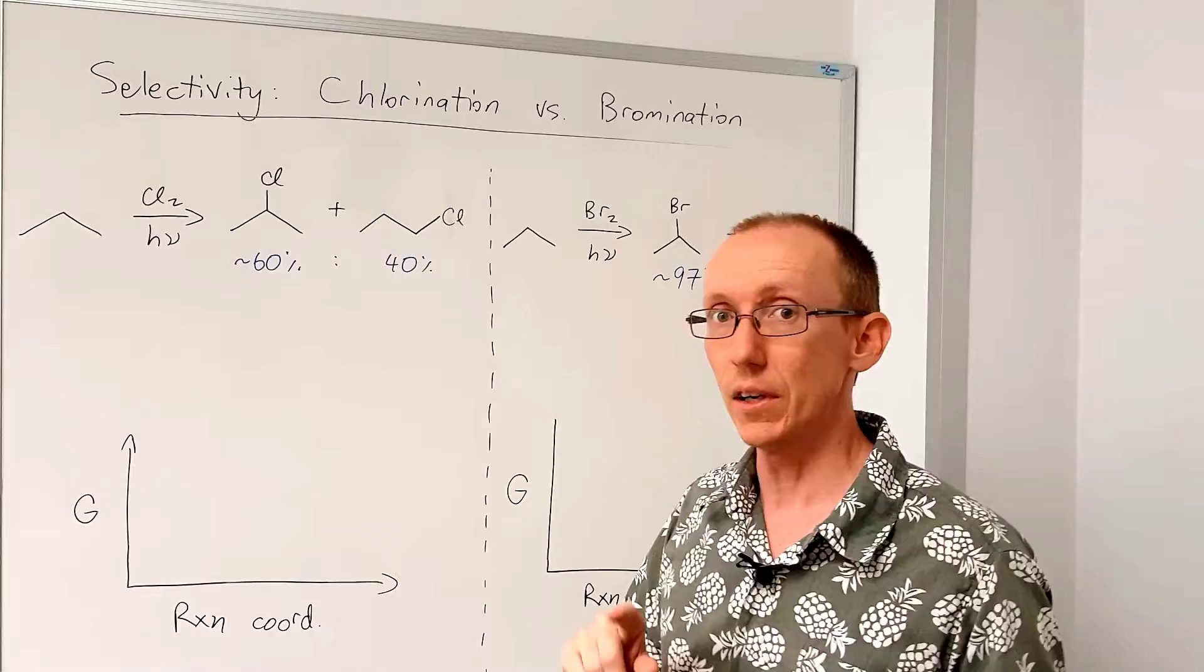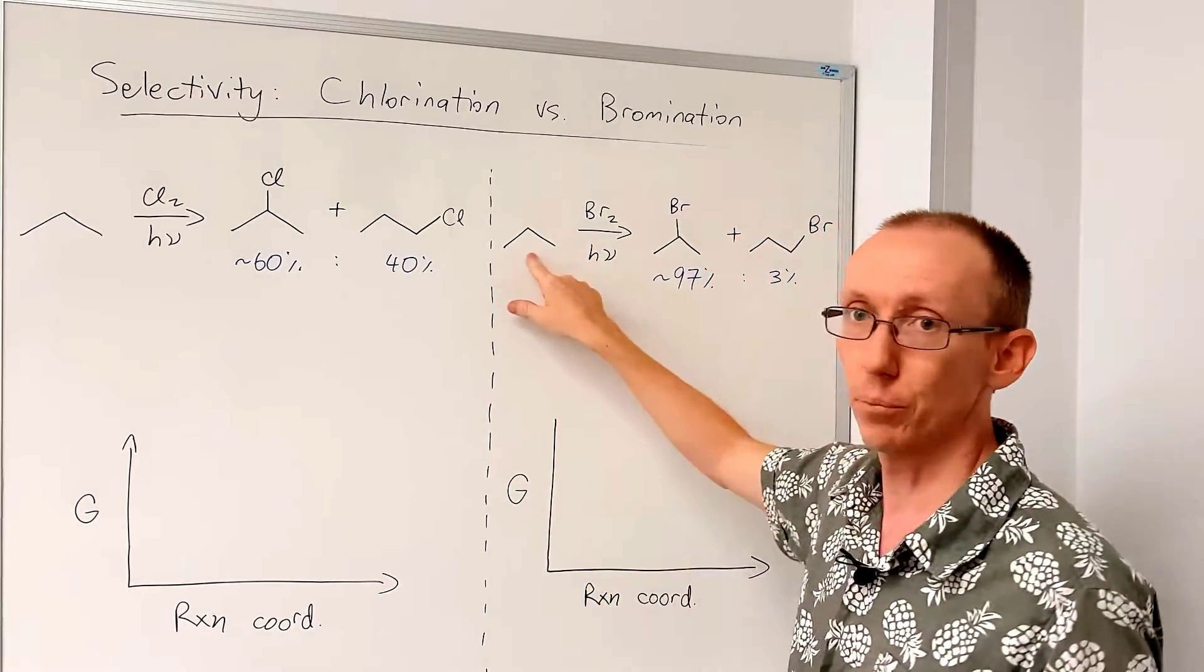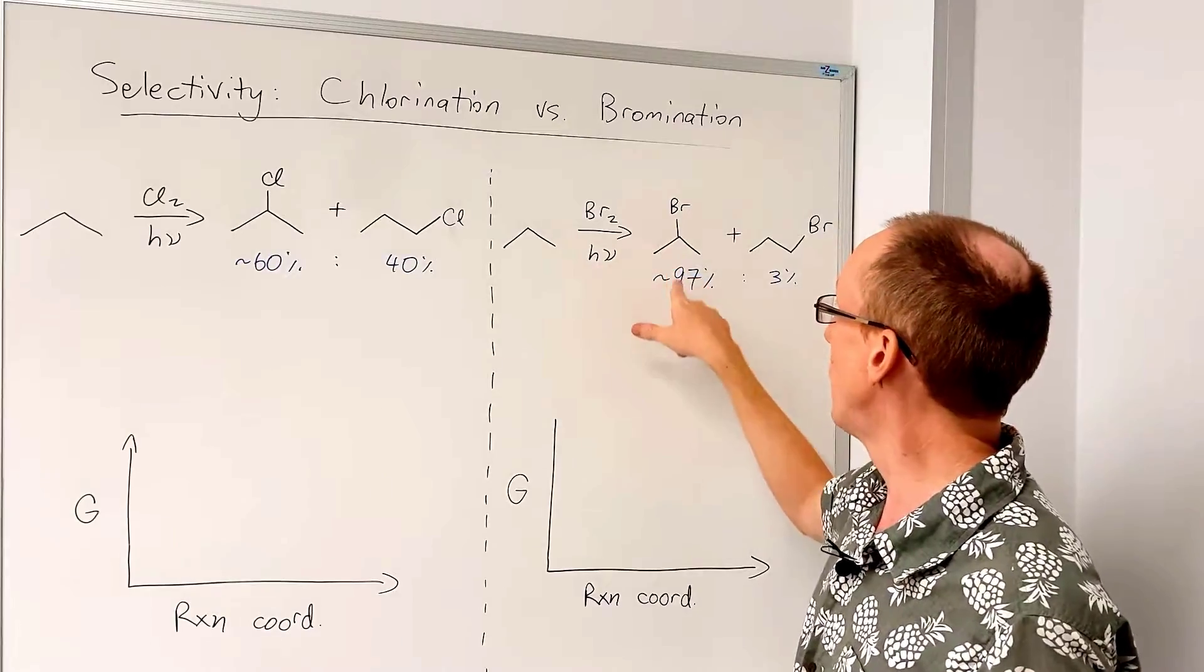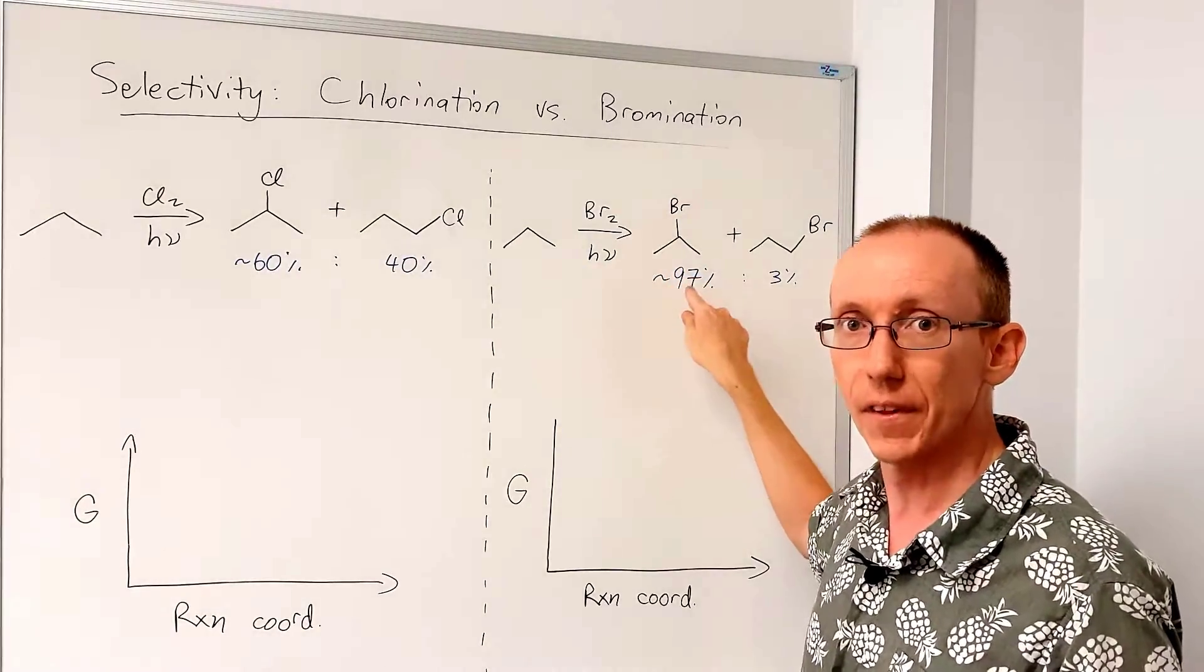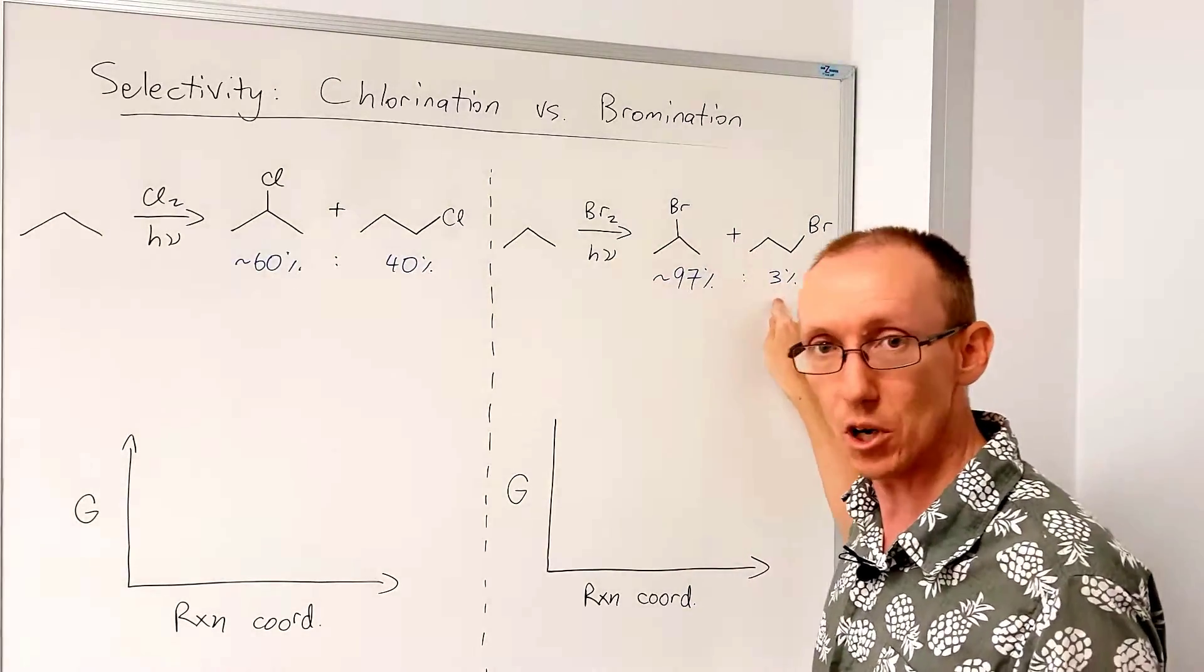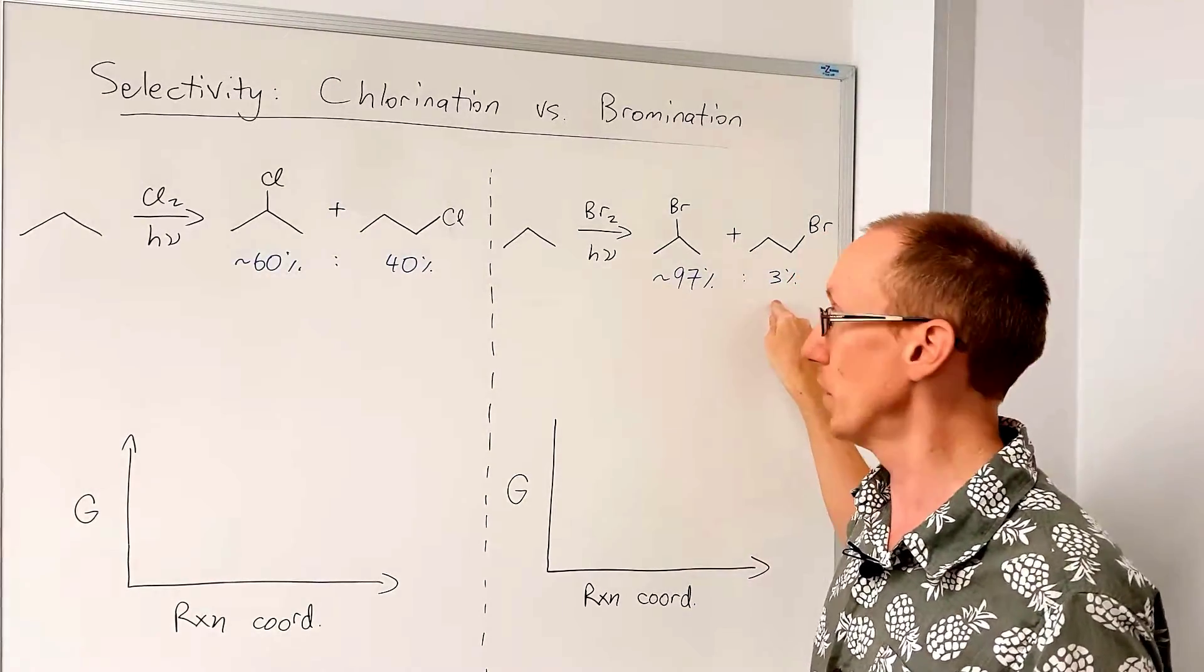But what's more curious is when we brominate propane under photolytic conditions, we get a very high selectivity for the secondary alkyl bromide versus the primary alkyl bromide. Much higher selectivity than in the chlorination.